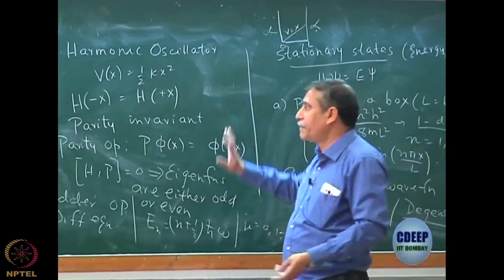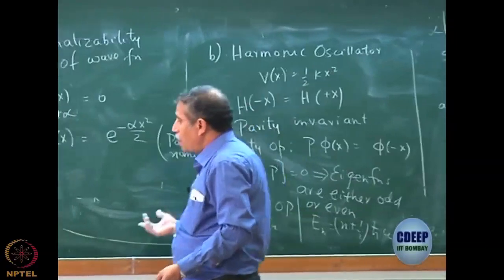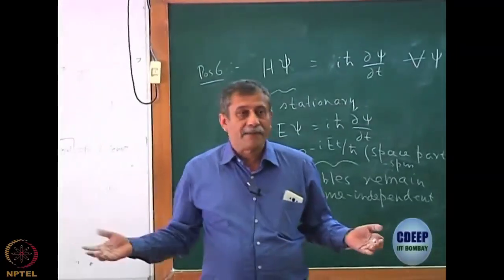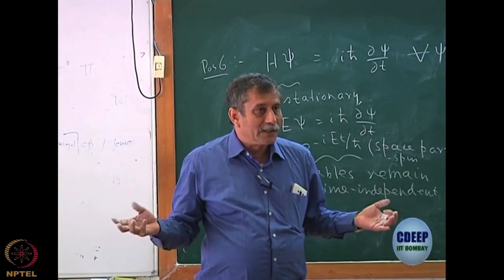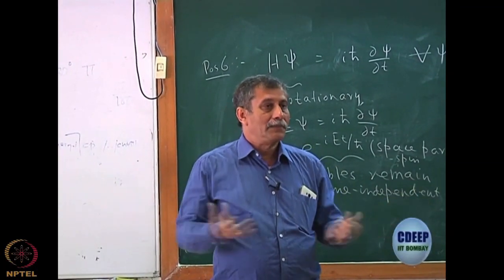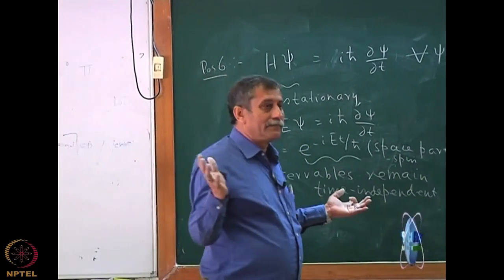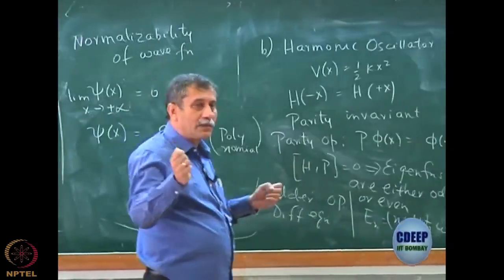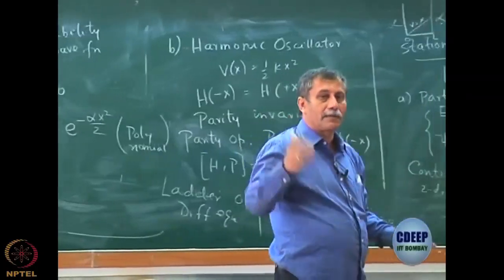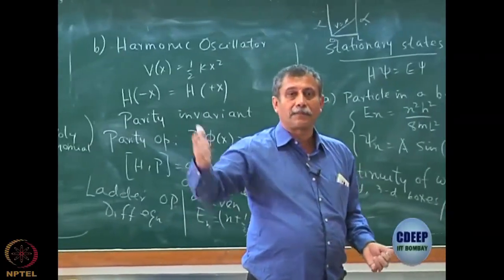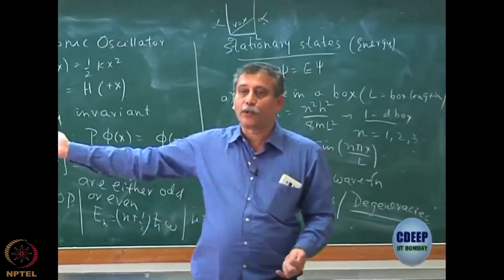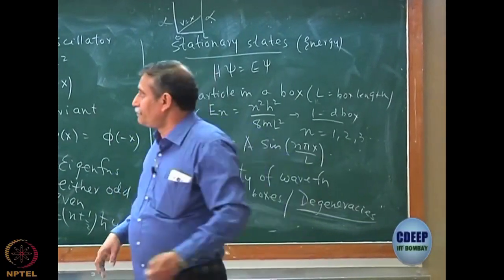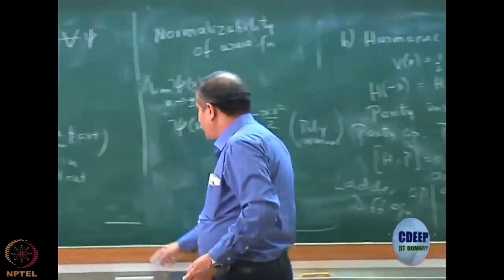This is done for the 1D harmonic oscillator; you can do the same for 2D and 3D uncoupled harmonic oscillators. If the potential is half kx² plus half ky² plus half kz², it is trivial using the non-interacting theorem — the wave function is a product and energy is a sum. The third example we did was the hydrogen atom, which is formally a two-particle problem.